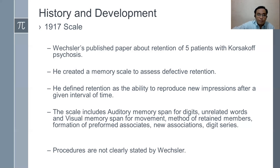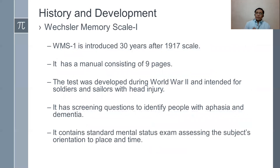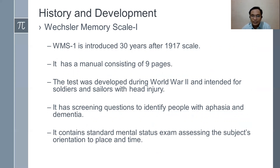The main problem of the 1917 scale — being the first memory scale produced by Weschler — is that the procedures were not clearly stated. But within the context of this 1917 scale, the process of developing the Weschler Memory Scale began. The Weschler Memory Scale 1 was introduced 30 years after the 1917 scale, after intensive research by Weschler. The focus shifted from retention to what we now call memory.